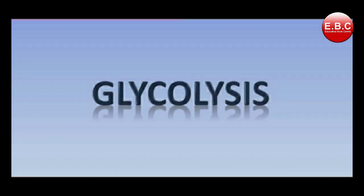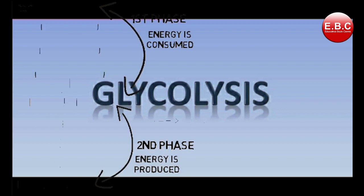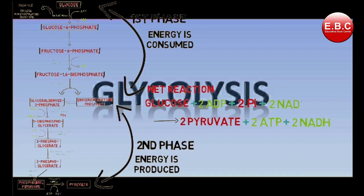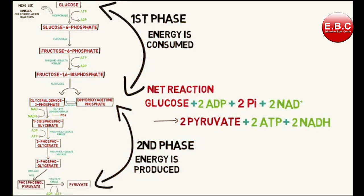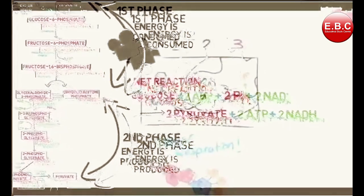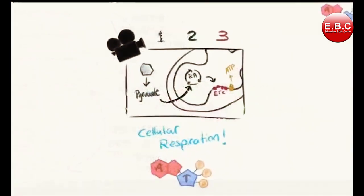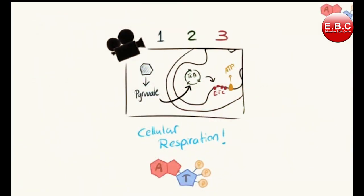Now the question arises, what is it all about? It is a universal pathway occurring in all living cells, consisting of 10 steps. This looks quite tricky, but we will study it in detail now.